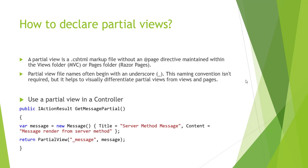How to declare a partial view? A partial view is a .cshtml markup file without a page directory, maintained within the Views folder in MVC or the Pages folder in Razor Pages. Partial view file names often begin with an underscore. This naming convention isn't required, but it helps to visually differentiate partial views from regular views and pages.